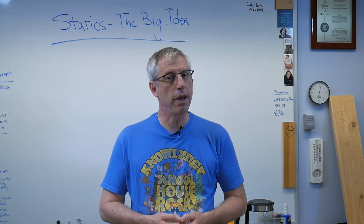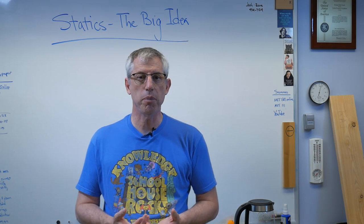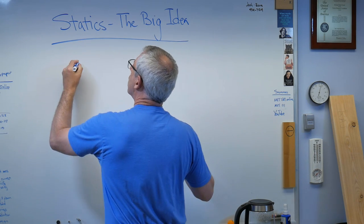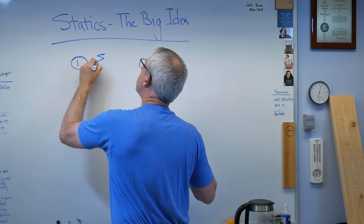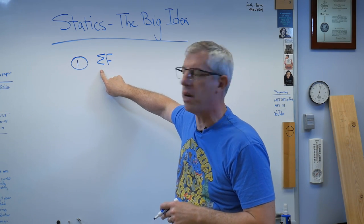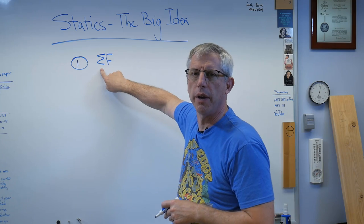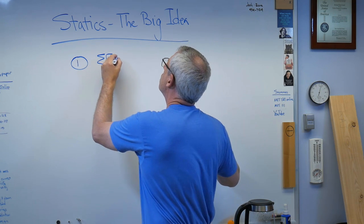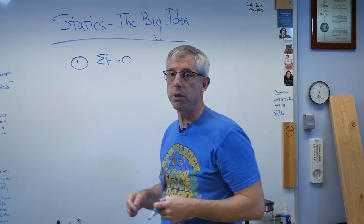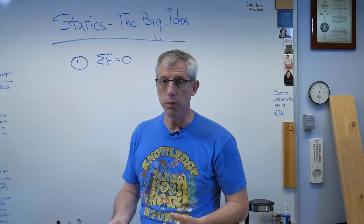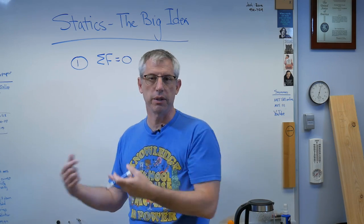There's not much theory here. It basically boils down to about four things. Number one: sum of the forces - that's the Greek letter sigma - sum of the forces equal zero. If the sums of the forces don't equal zero, your structure isn't static, it's moving. That's dynamics, that's another class.